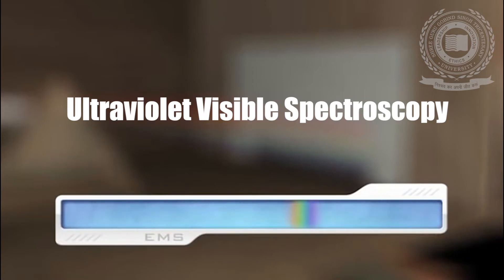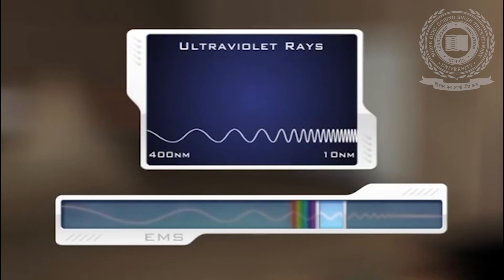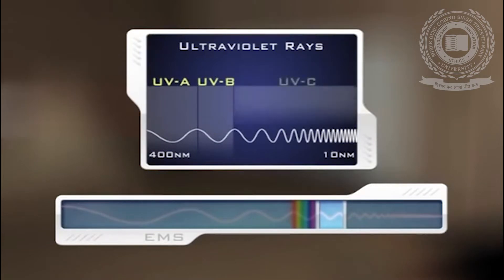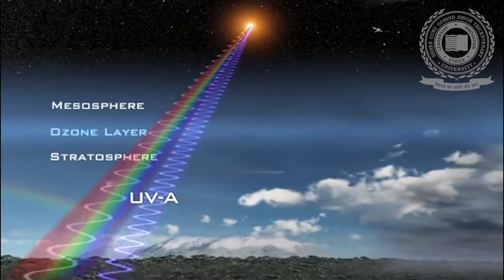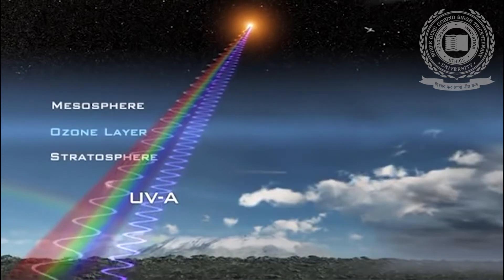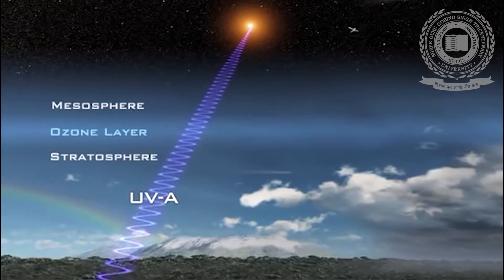Ultraviolet visible spectroscopy is the study of electronic transitions of the molecules by irradiating with UV visible range of radiations. The ultraviolet region extends from 10 to 400 nanometer in electromagnetic spectrum, which is subdivided into three regions: UVA, UVB, and UVC.